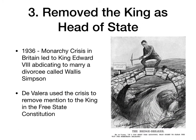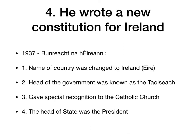The third thing he did was he removed the king as head of state. In 1936 there was a monarchy crisis in Britain — King Edward VIII abdicated to marry a divorcee called Wallis Simpson. The king could not marry a divorcee, so to marry his wife he abdicated the throne and was replaced by his brother George VI. De Valera used this crisis to remove any mention of the king in the Free State Constitution.